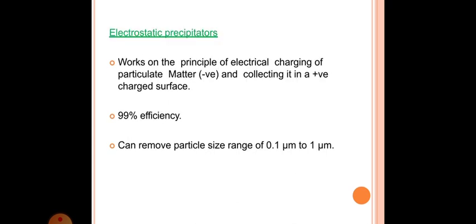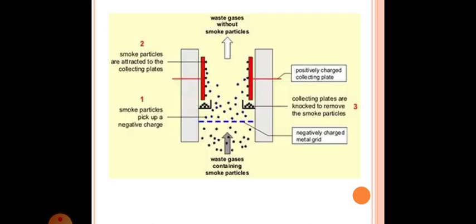Electrostatic precipitators works on the principle of electrical charging of particulate matter negative and collecting it in a positive charged surface. 99% efficiency, can remove particle size range of 0.1 to 1 micron. Waste gases without smoke particles.